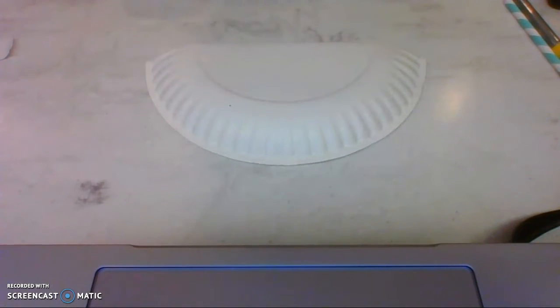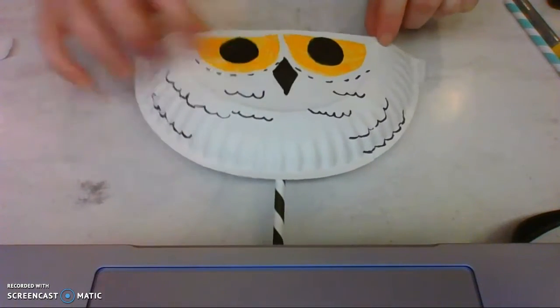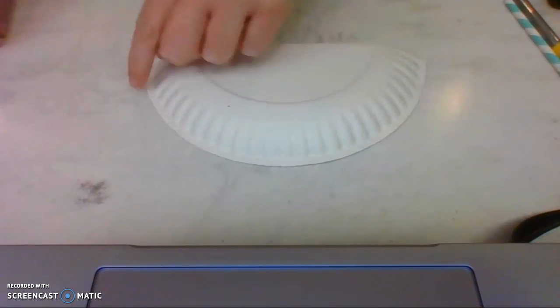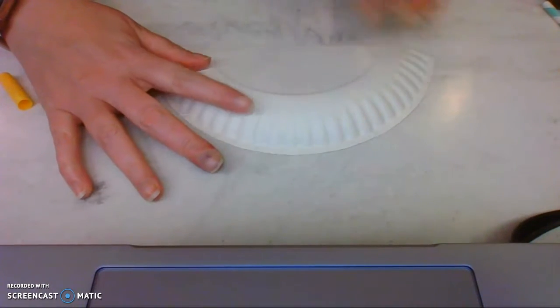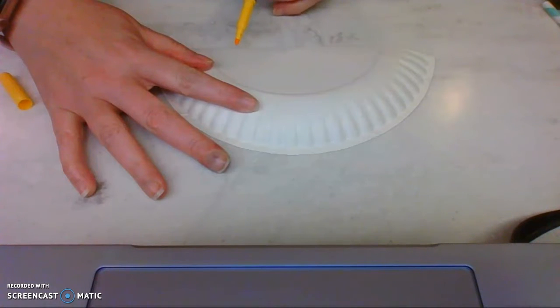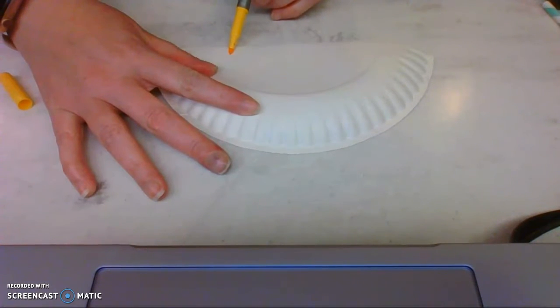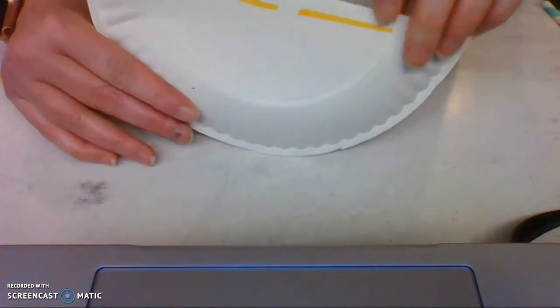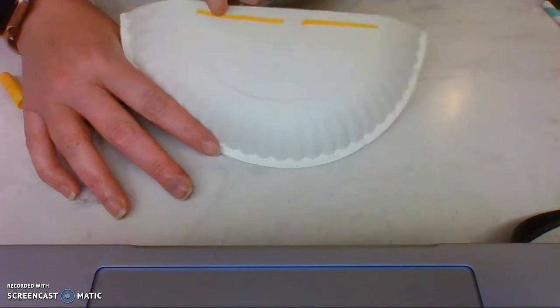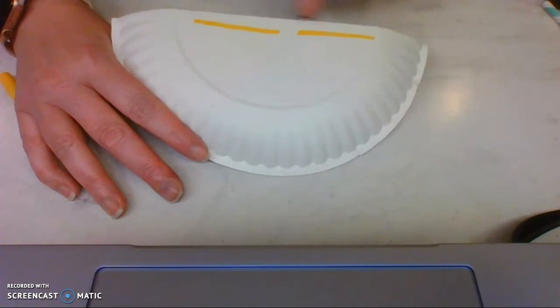This flat piece is going to be the top part of my Hedwig puppet. See, here we go. And this round piece is going to be the bottom of my Hedwig puppet. So I'm going to take a yellow marker, color crayon, or colored pencil, and I'm going to draw a flat line, a straight line, just like that. So I did about halfway in the middle.